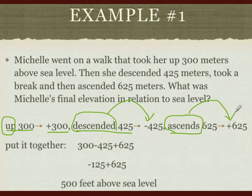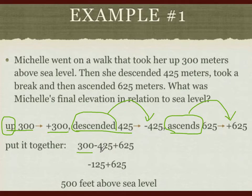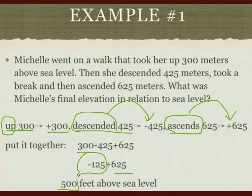Now that we know the given information, let's put it together and solve. Making a mathematical expression makes it easier: 300 minus 425 plus 625. So 300 minus 425 is −125, and then adding 625 gives us positive 500 meters above sea level. Now look back — does it make sense? Do you think it is really positive 500 meters above sea level?